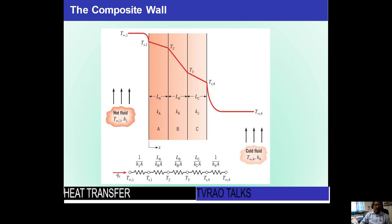The composite wall consists of three walls: wall A, wall B, and wall C. One side the temperature is T-infinity-1 and the other side is T-infinity-4. The surface temperature is T1; the second wall starts at T2, the third wall starts at T3, and the third wall ends at T4. Wall A has thickness L_A, wall B has thickness L_B, and wall C has thickness L_C. These three walls have thermal conductivities k_A, k_B, and k_C, and there is a heat transfer Q.